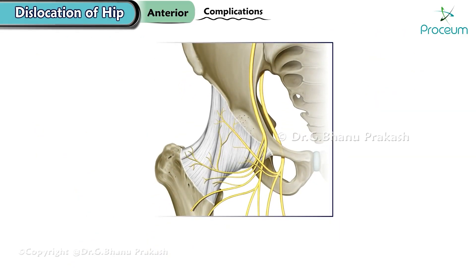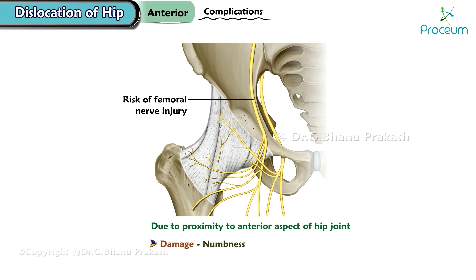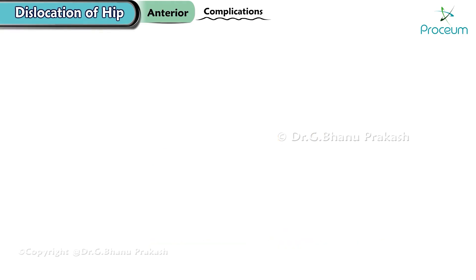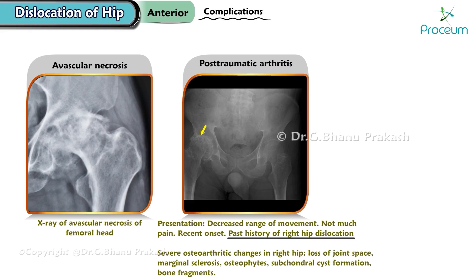Complications. Complications associated with anterior hip dislocation include the risk of femoral nerve injury. The femoral nerve is located close to the anterior aspect of the hip joint, and damage to this nerve can result in symptoms such as numbness, tingling, or weakness in the lower limb. Additionally, like all hip dislocations, there are potential complications such as avascular necrosis, post-traumatic arthritis, and an increased risk of future dislocations.